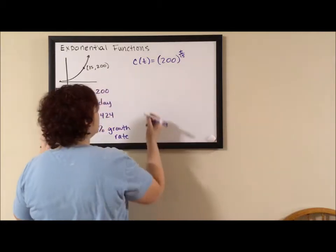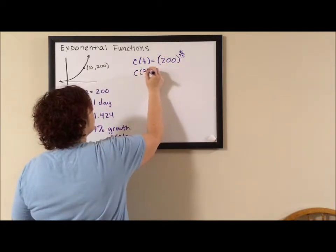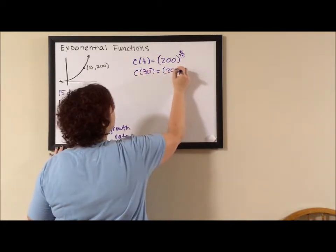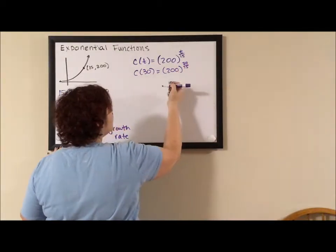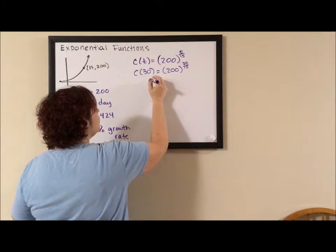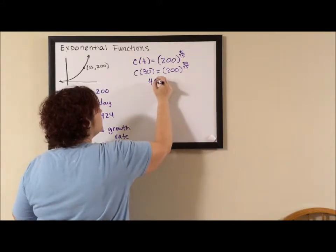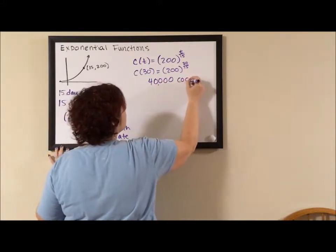Then when we go up to 30, cockroaches over 30 days is 200 to the 30 over 15, which is 200 squared. And 200 squared is 2 times 2 is 4, and double the zeroes - 1, 2, 3, 4 - and it's 40,000 cockroaches.